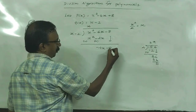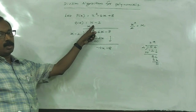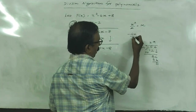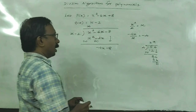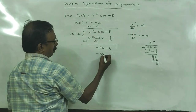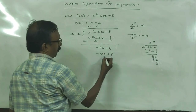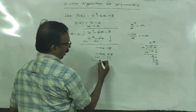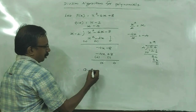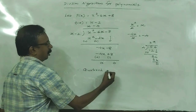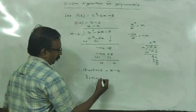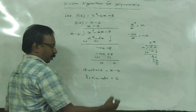Dropping -8 here. The next term in the quotient polynomial is obtained by dividing -4x by x, so we get -4. This is the next term: -4. Then -4 times x is -4x, and -4 times -2 is +8. Again changing the signs and adding, we get 0. Therefore, the quotient is x - 4, and the remainder is 0.